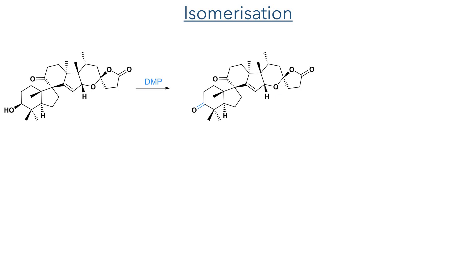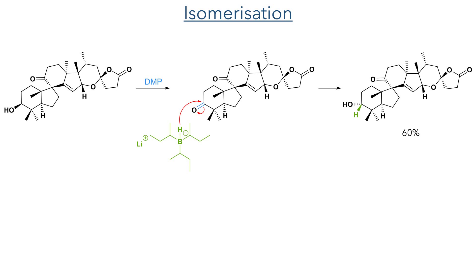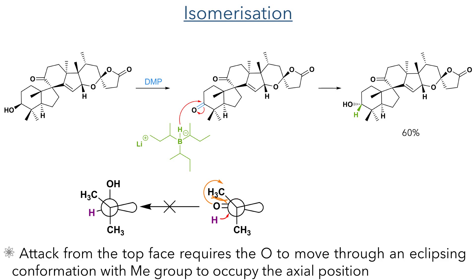The authors could not directly transform spirochinenside A into spirochinenside B, so instead they returned to an earlier precursor and oxidised the hydroxyl group using Dess-Martin periodinane to produce a ketone. L-selectride was then used to reduce this ketone in a 60% yield to form a hydroxyl group with the opposite stereochemistry. Attacking this ketone from the top face should be disfavoured due to steric repulsion from the axial methyl groups, but a possible explanation for the stereochemical result could lie in torsion effects. If the nucleophile attacks from the bottom face, the oxygen must pass through an eclipsing conformation with the alpha-methyl group in order to take up the axial position upon addition of the hydride. However, if the hydride attacks from the top face, this eclipsing conformation is avoided, giving a lower kinetic energy barrier. This product would also be more thermodynamically stable, as having the larger oxygen group in the equatorial position minimises 1,3-diaxial interactions with the other methyl groups present in the molecule.